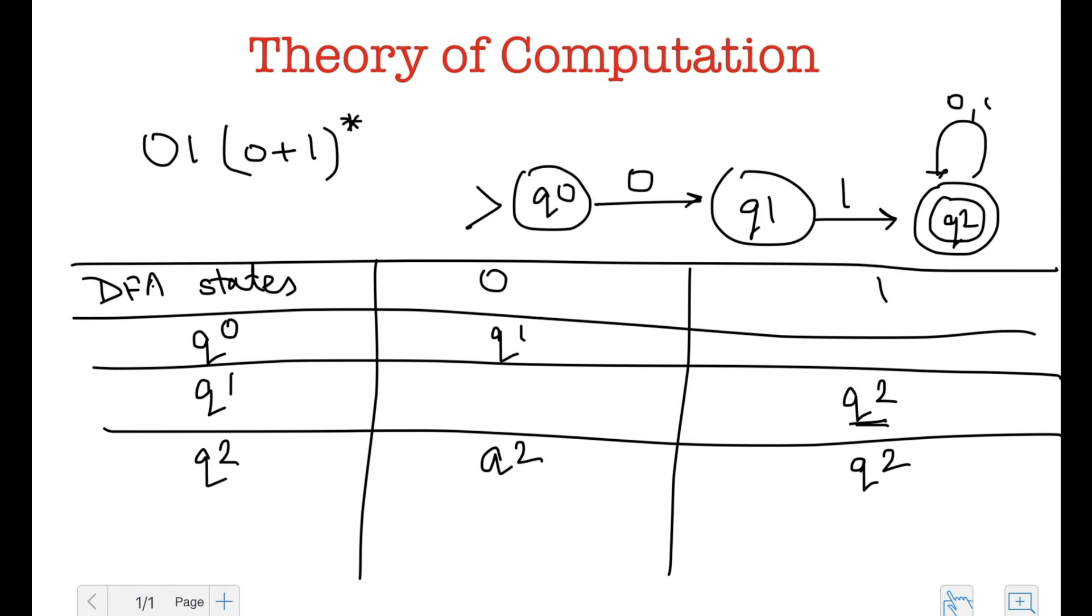So now we have these two blank spaces. So what do I fill in here? And the way to do this is to actually create a new state, which we call as the trap state or the dead state. So I write a T here and a T here as well.